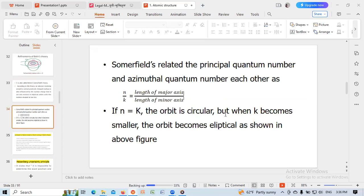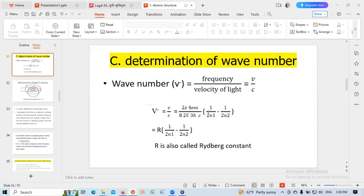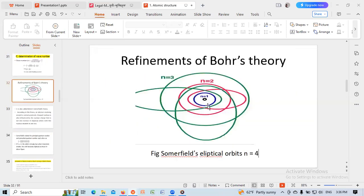Sommerfeld related the principal quantum number and azimuthal quantum number to each other as n by k, representing length of major axis to length of minor axis. If n equals k, the orbit is circular like this.